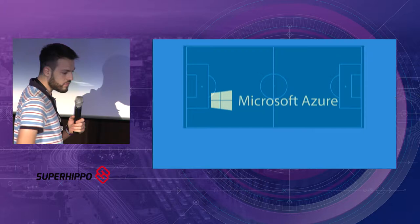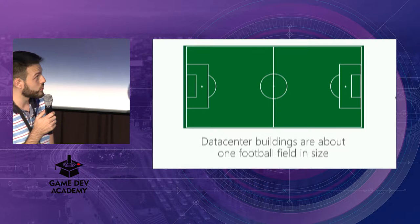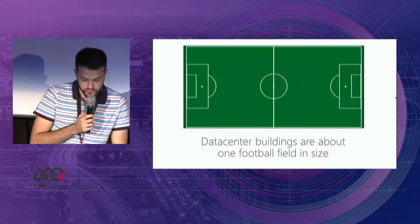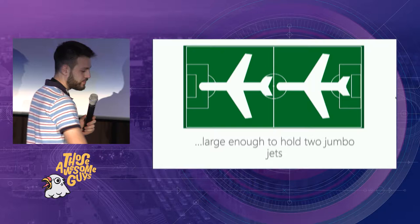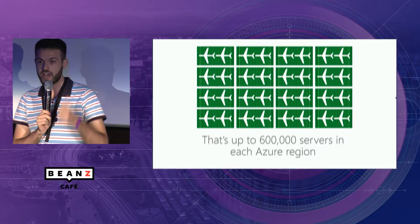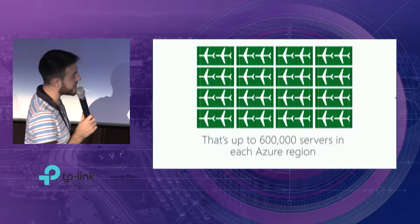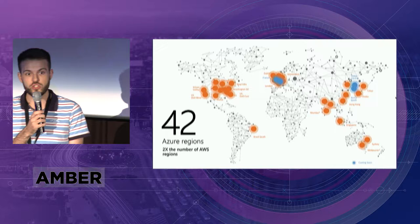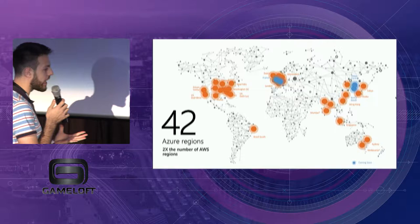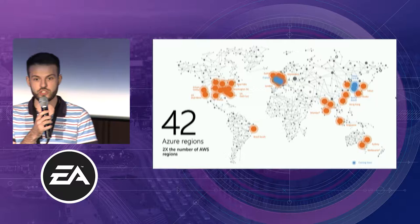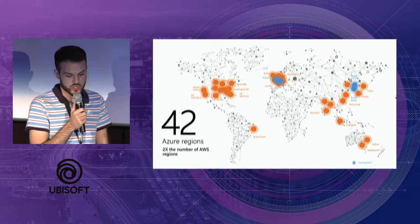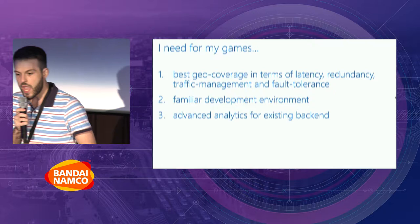This is a slide that's really fun to show to customers: a data center in Azure is the size of a football field where you can fit two jumbo jets. There are around 16 such buildings in one Azure region, which sums up to 600,000 servers. And there are 42 regions. So when I say that you will be able to reach a global scale, I really mean it — even if you have customers in South Africa, China, Brazil, or Western Europe.